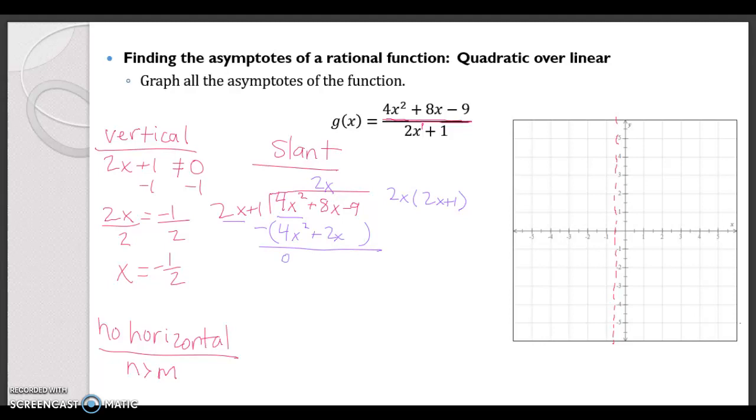8x minus 2x is 4x, and then negative 9 minus 0 is just negative 9. Okay, now how many times does 2x go into 4x? Well, I just did some math wrong, maybe you guys caught that. 8x minus 2x is a positive 6x. Okay, there we go.